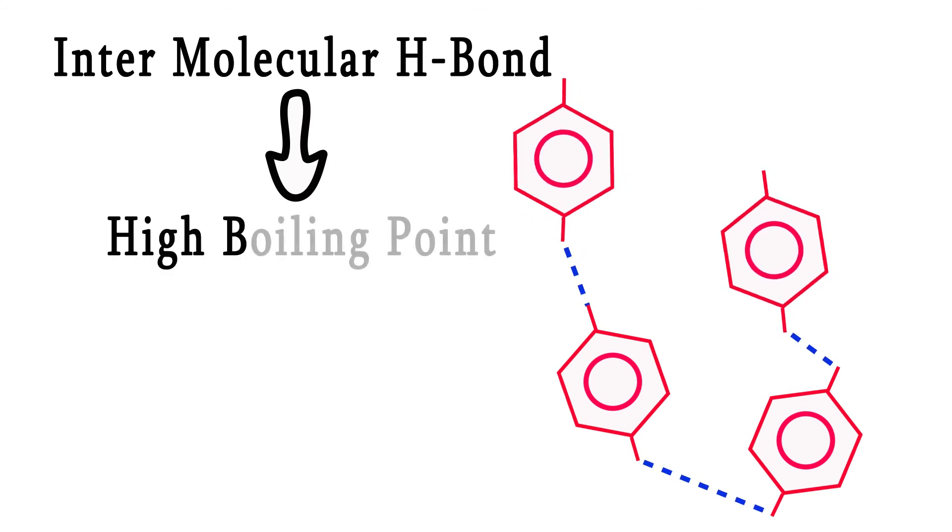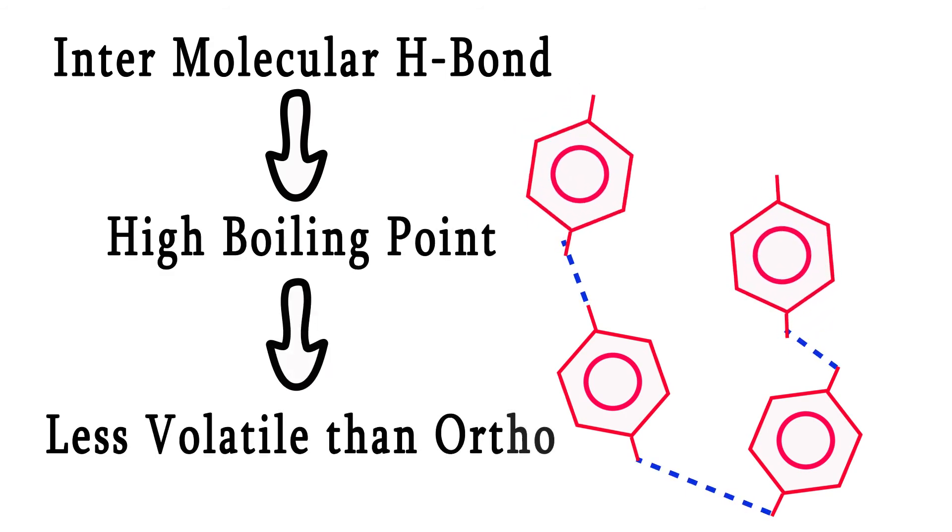Para nitrophenol will have high boiling point and it's less volatile than ortho nitrophenol.